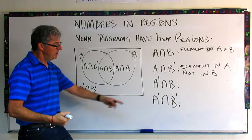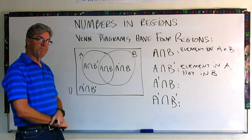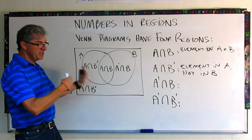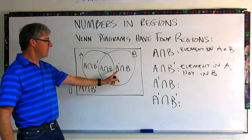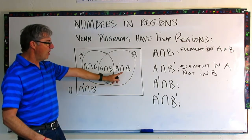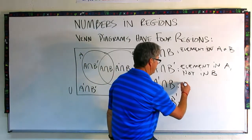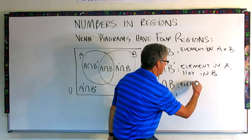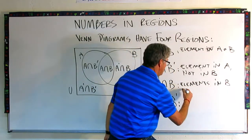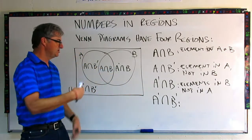Now see if you can come up with a description for the next one. Pause the video and see what you get. This one is very similar to the previous one — it's just the opposite. This is the intersection of the complement of A and B. Another way to say that is these are all the elements that are not in A but in B. So: elements in B, not in A. These two regions are very similar — just sort of the opposite of each other.